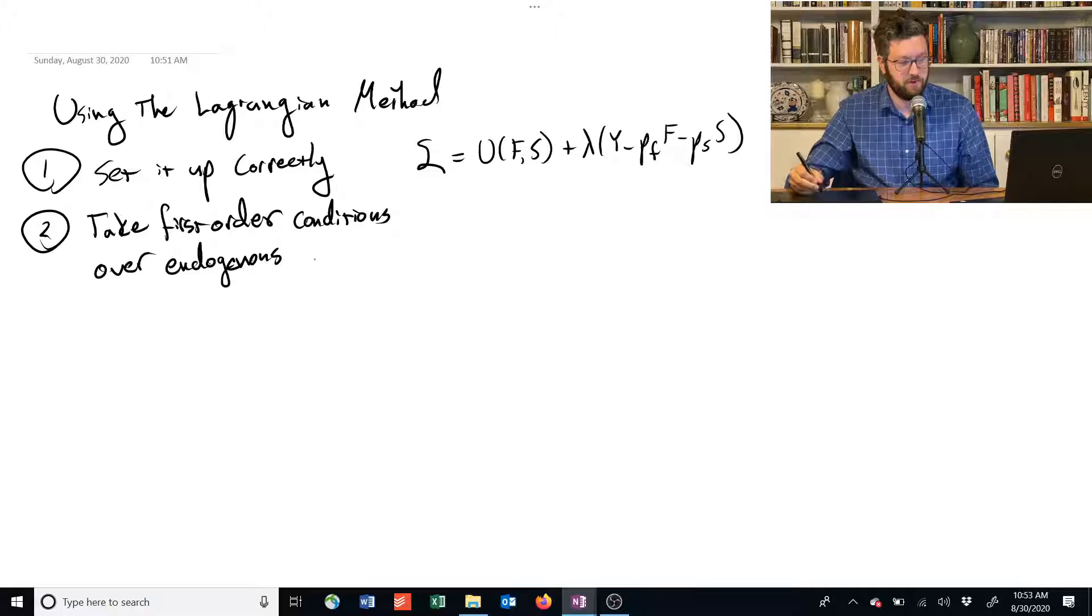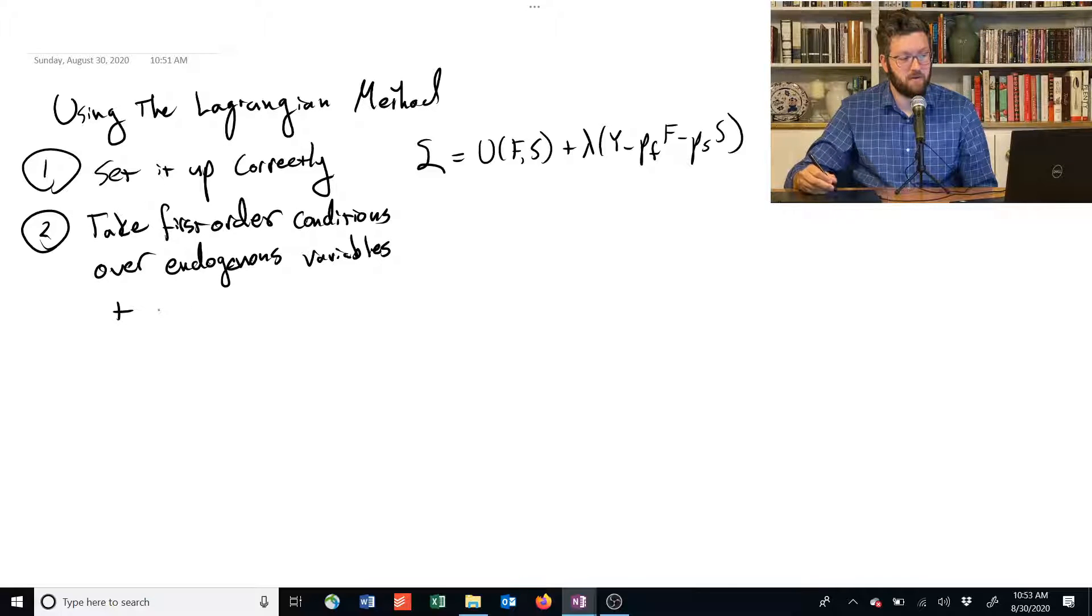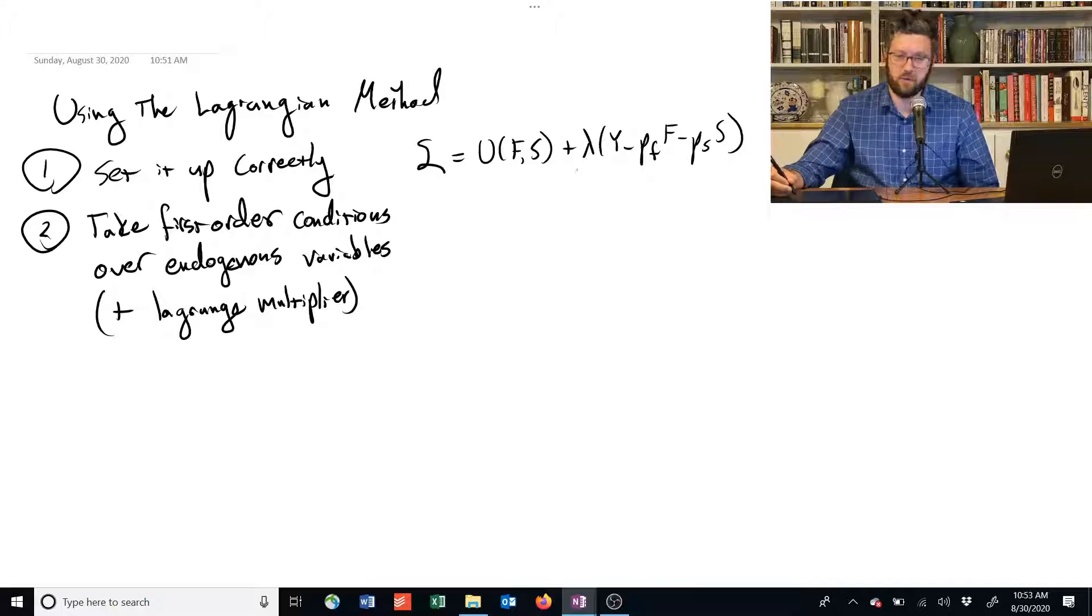the endogenous variables are food and shelter. Okay, but we also, when we're using the Lagrangian method, have to take the first-order condition with respect to the Lagrange multiplier, which is that new little thing we created.